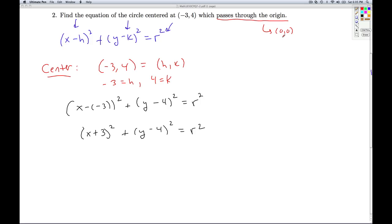So if the circle passes through the origin, then that means (0, 0) is on the circle, which means when x equals 0 and y equals 0, this equation is true. So what I'm going to do is substitute in x equals 0 and y equals 0. So if I do that, I get (0 + 3)² + (0 - 4)² = r². And I know this equation has to be true because the circle passes through the origin.